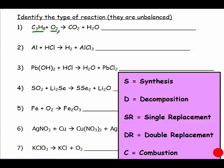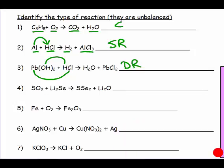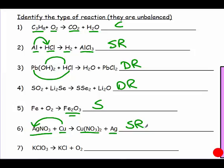For number one, we have a hydrocarbon and oxygen, and the products are CO₂ and water — that's a combustion reaction. For two, you have an element and a compound that yielded an element and a compound; aluminum kicked out hydrogen, so that's single replacement. For three, two compounds swapped partners and ended with two compounds — double replacement. For four, same pattern — double replacement. For five, you have one product — one product is always synthesis. For six, an element and a compound yielded an element and a compound with one swap — single replacement. For seven, you have one reactant that broke apart — that's decomposition.